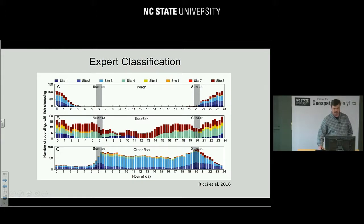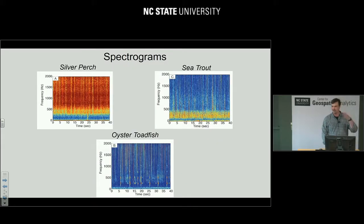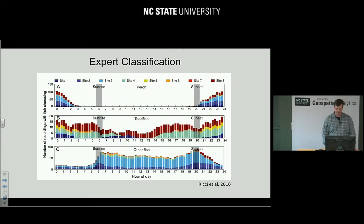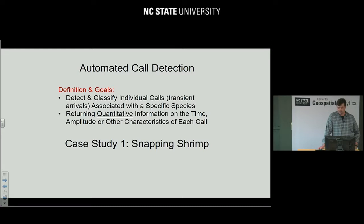What we'd like to do instead is automatically detect calls from one or more animals. Automatic call detection means we pick up the signal, classify it correctly to a species, and measure its exact arrival time at the hydrophone, its amplitude, and other characteristics. That's where we want to go. Our first case study is snapping shrimp — one of the first call detectors we built. The term 'snapping shrimp' refers to a couple dozen different species two to five centimeters in size, with one large claw and one small claw.